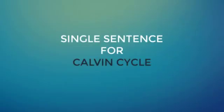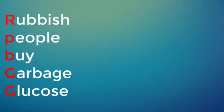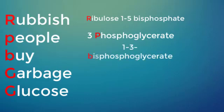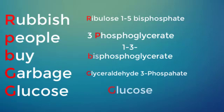Here is a single sentence that is helpful in memorizing the whole process of the Calvin cycle, which is: rubbish people buy garbage glucose. Rubbish here is for RUBP ribulose 1-5 bisphosphate, people for PGA or 3-phosphoglycerate, by B is for 1,3-bisphosphoglycerate, garbage G is for glyceraldehyde 3-phosphate or G3P, glucose is for glucose.